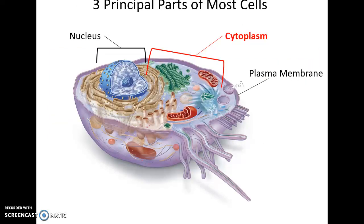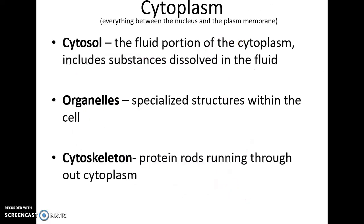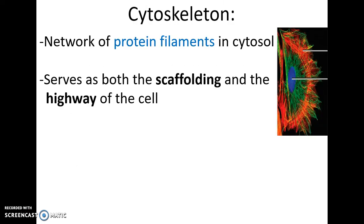The cytoplasm is everything between the nucleus and the plasma membrane. It contains the cytosol — the fluid including dissolved substances — the organelles as specialized structures, and the cytoskeleton, which forms protein filament structures throughout the cytoplasm that can run along the surface of the plasma membrane or throughout the entire cell.